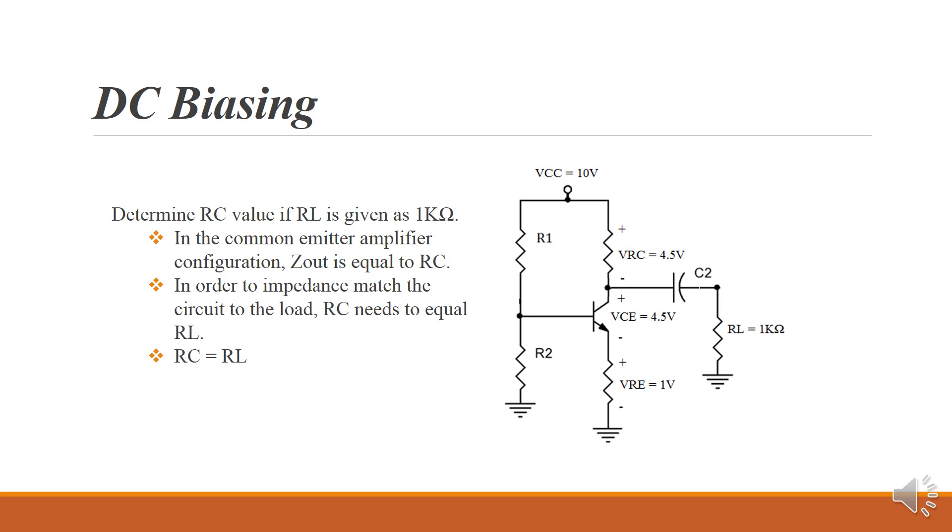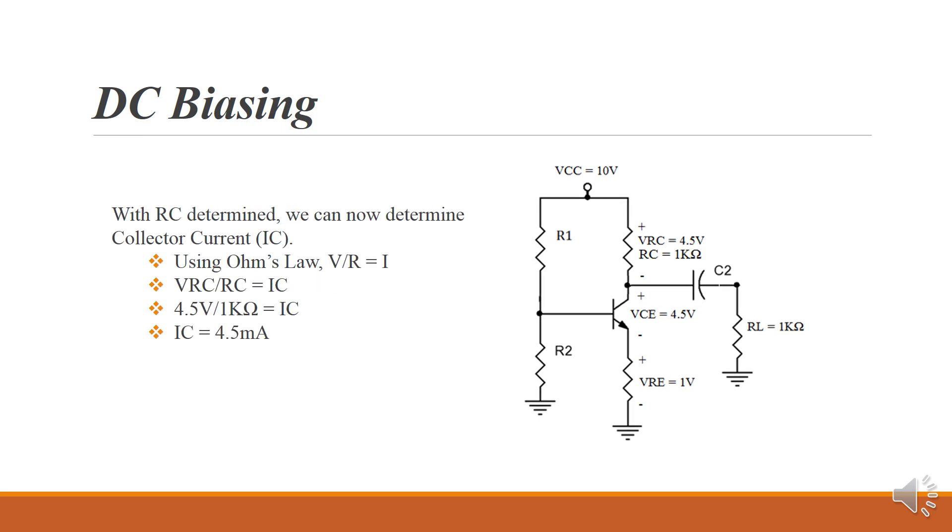Now that we've got RC at 1K ohm, we can determine the collector current. We know that VRC is equal to 4.5 volts. With an RC of 1K, now we can use Ohm's law. Voltage divided by resistance gives us current, which leaves us with 4.5 milliamps for IC, collector current.